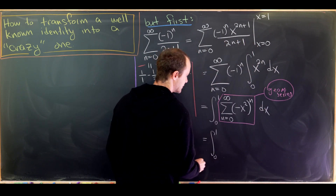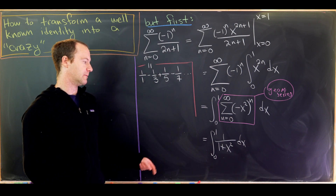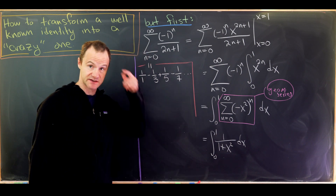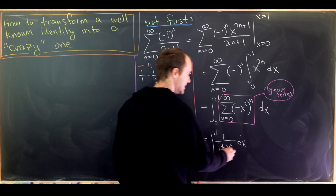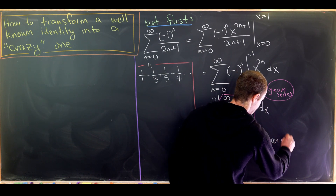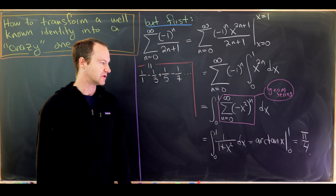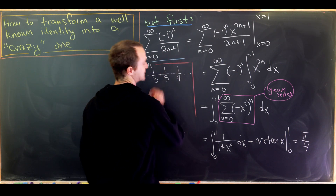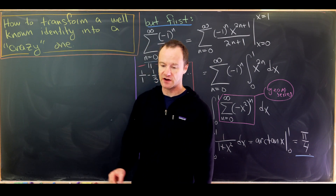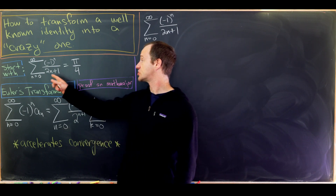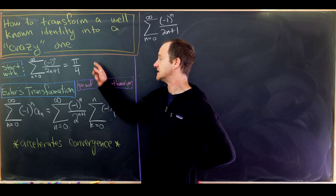This sum inside is in fact the geometric series, so we can apply the geometric series summation formula. That gives us the integral from zero to one of 1/(1+x²) dx — recall it's one over one minus the common ratio, and we're subtracting (-x²), giving 1+x². This integral equals the arctan of x evaluated from zero to one: arctan(1) = π/4 and arctan(0) = 0. So our well-known identity is the sum as n goes from zero to infinity of (-1)^n over (2n+1) equals π/4.